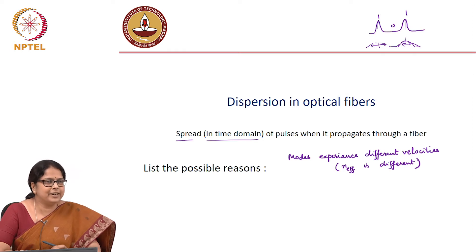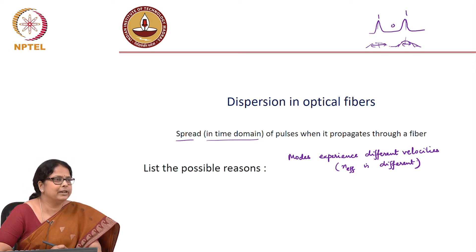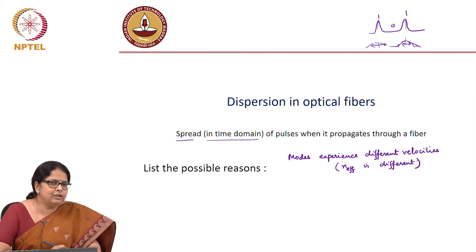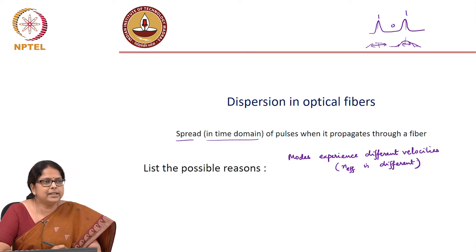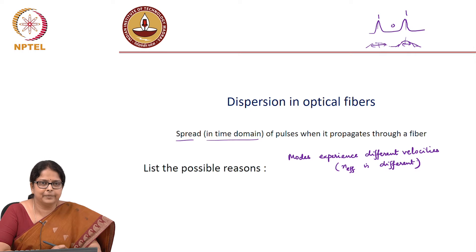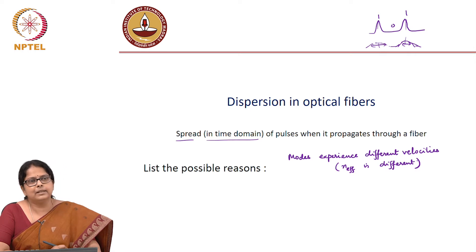Different modes will have different n_effective, so they will have different velocities. Is that dependent on n1, n2, lambda? Yes, indirectly it is dependent on n1, n2, lambda, a, and so on. What else causes pulse spreading?